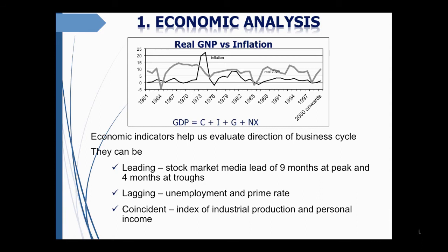Leading indicators change direction in advance of turning points and are useful for forecasting. While they predict direction, leading indicators do not predict the magnitude of upturns or downturns. Coincident indicators move approximately with the business cycle, while lagging indicators change direction after turning points, suggesting that they help confirm rather than predict those turning points.